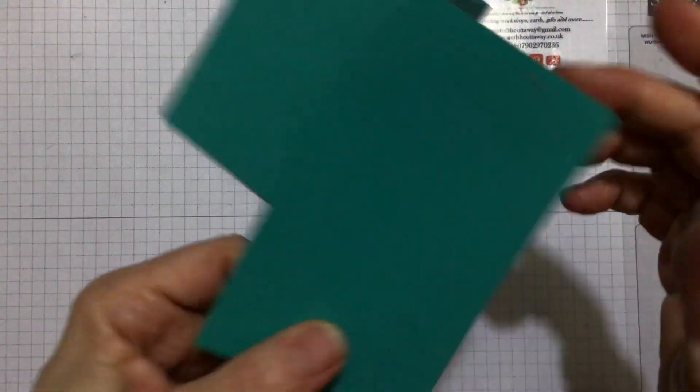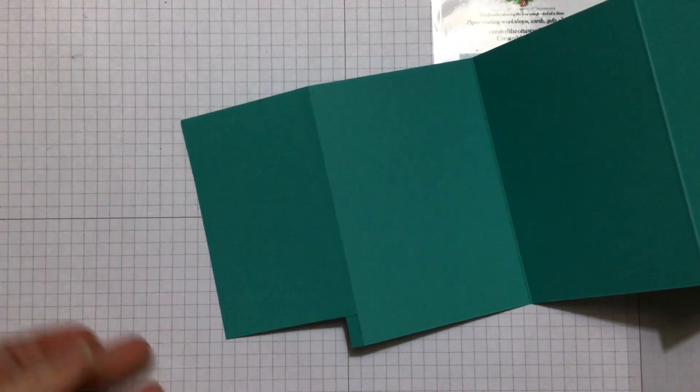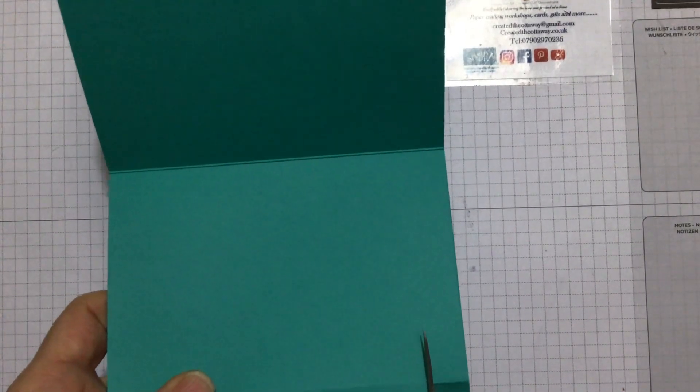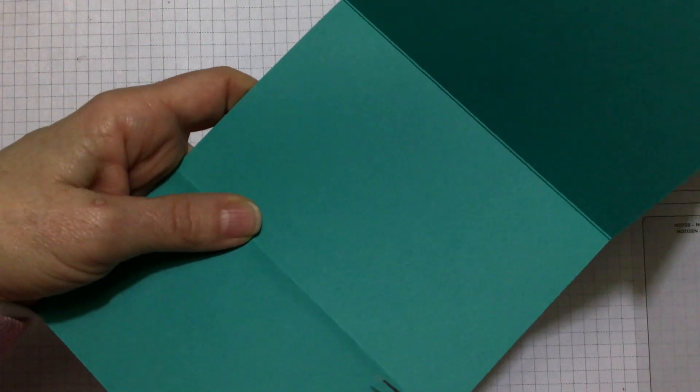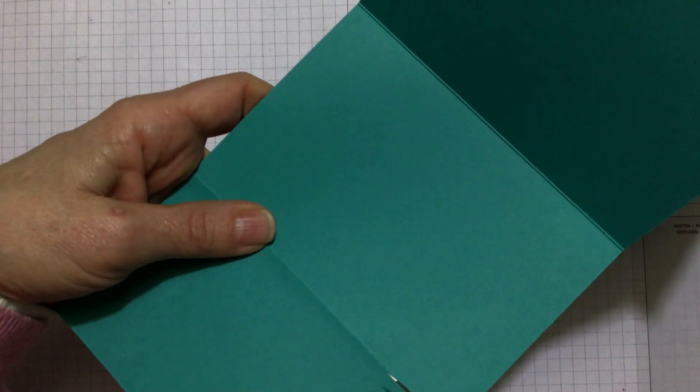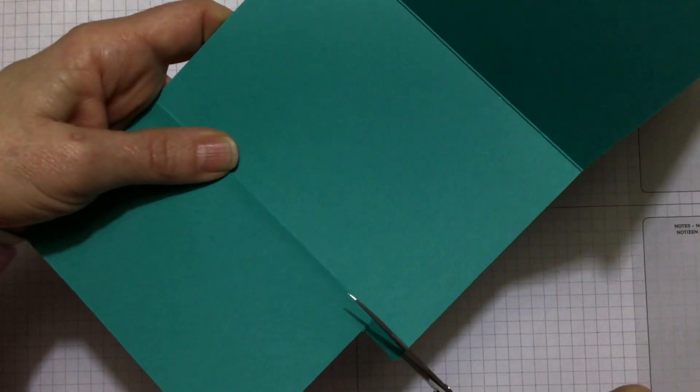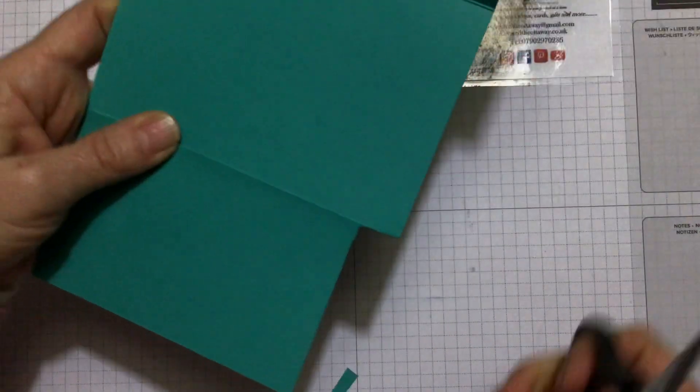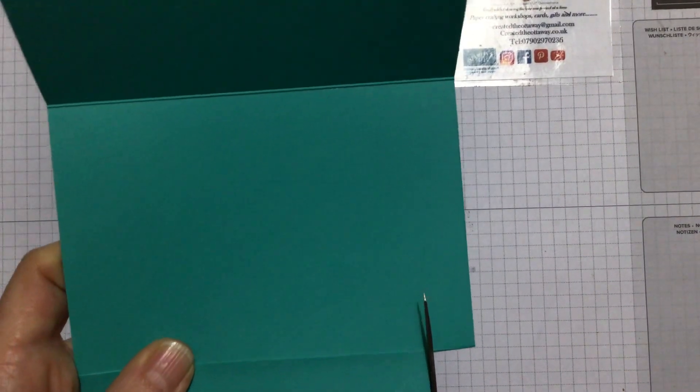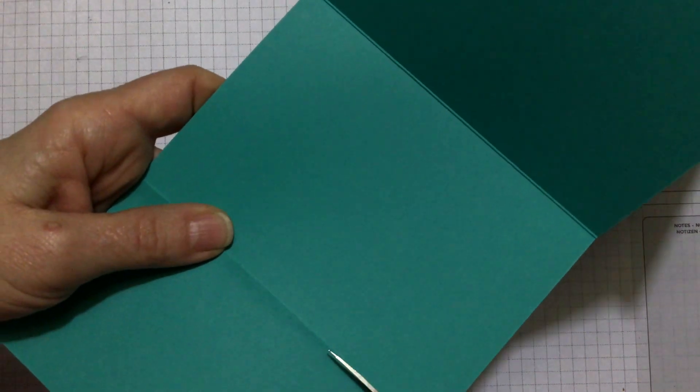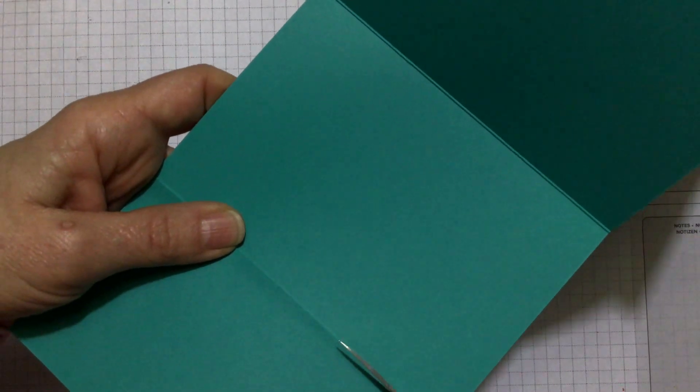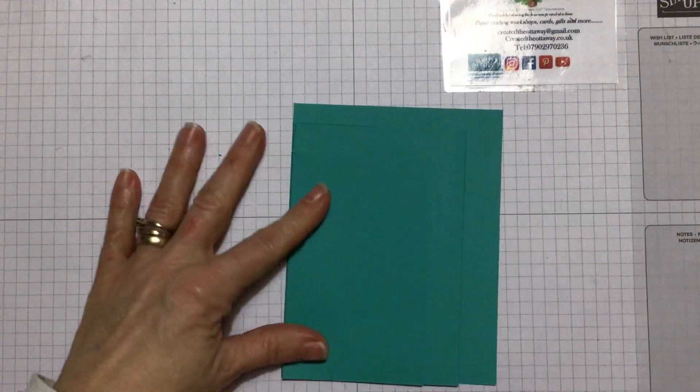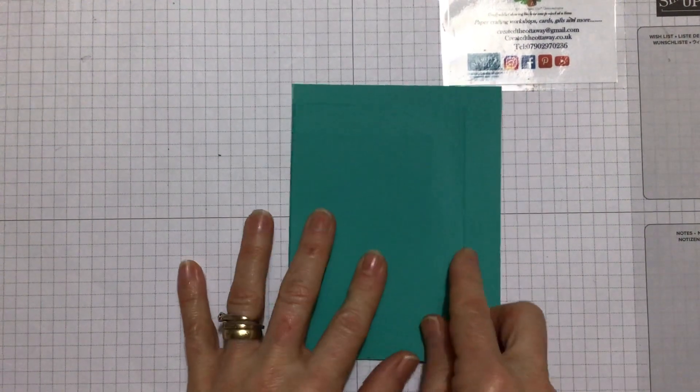I'm just going to get rid of this bit here. So again, I'm just going to open it out and I'm just going to trim it off. So again, you're not going to pull it, you're going to cut. That's the only trouble filming in the evening. So that's my four panels. And now we just need to decorate it.